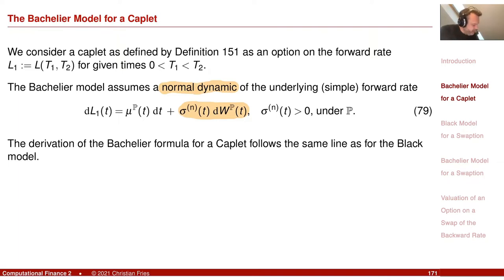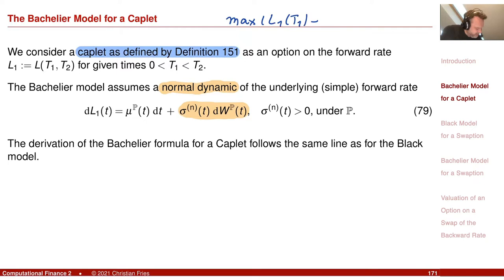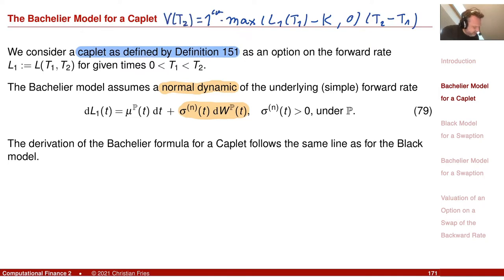We want to calculate the value of the Caplet. The payoff is: L1 fixed at the beginning of the period, minus K and 0, multiplied with the period length. I pay one unit of currency. This is the payoff which I receive at T2, so the payment time is T2.